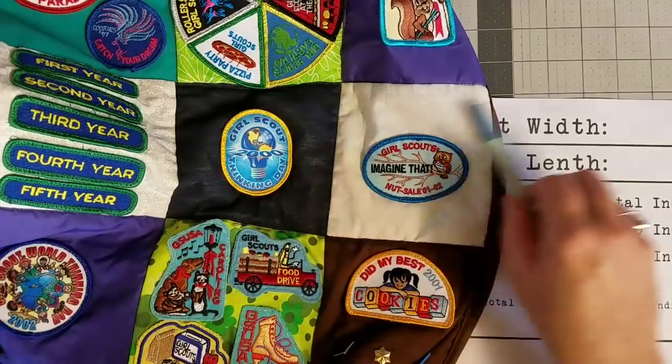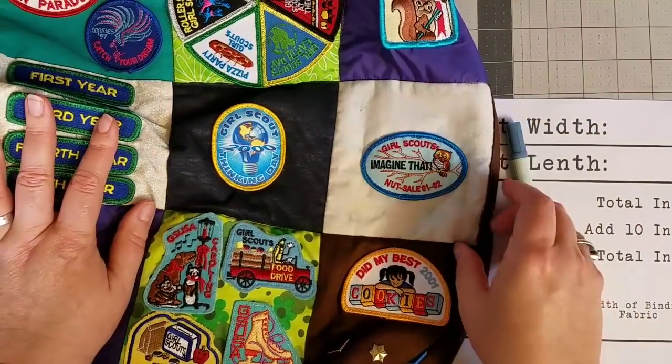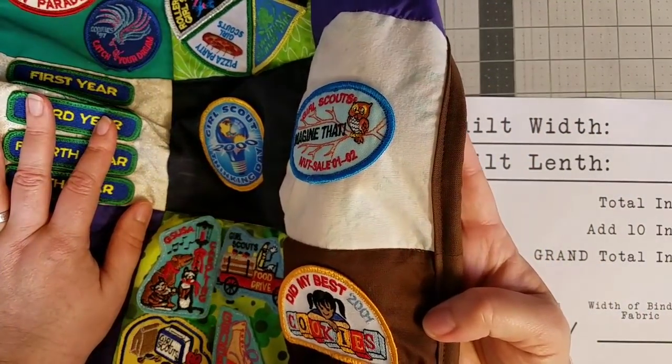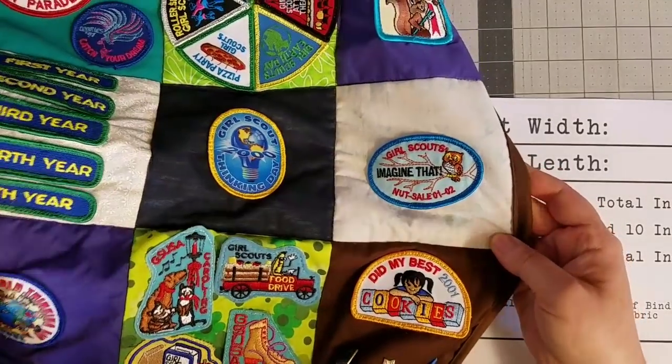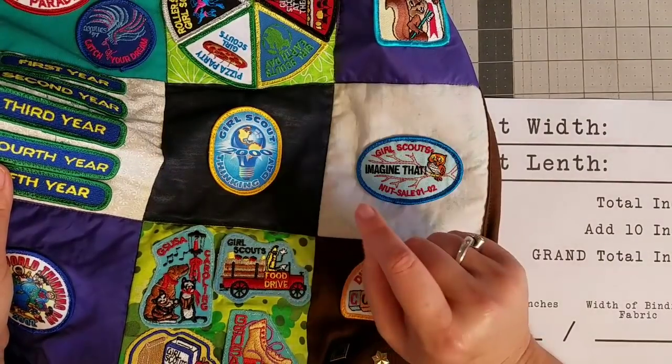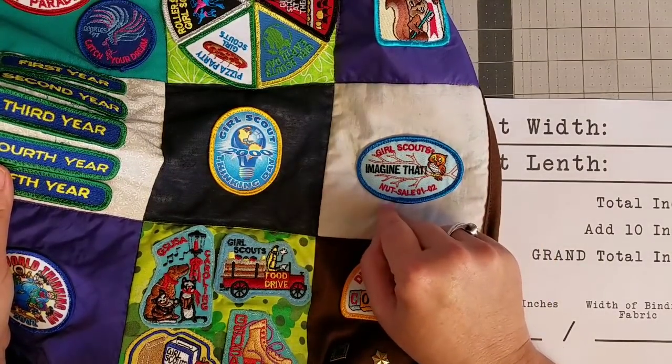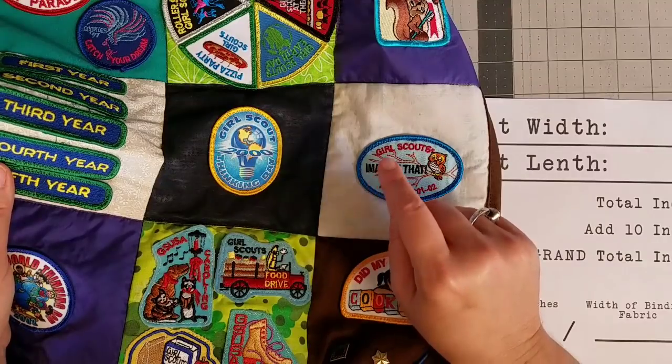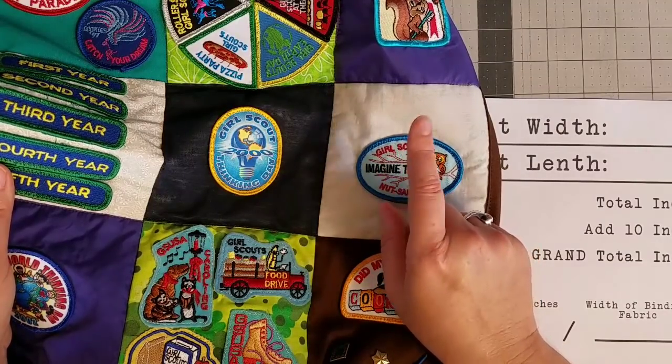I am showing a quilt as an example. This is the binding on this quilt. This is a fun little quilt. I made a quilt with Girl Scout patches, and if I haven't already posted this video, keep an eye out for it.